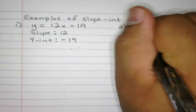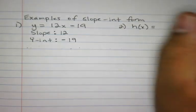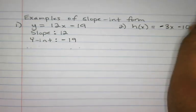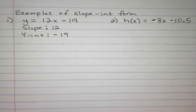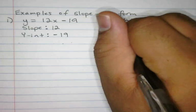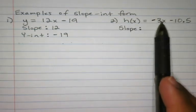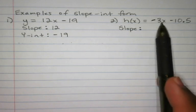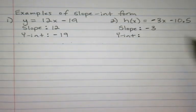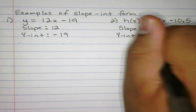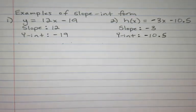Number two: h of x equals negative 3x minus 10.5. For the slope, I see a negative 3 in front of x — that's where my m would be — so my slope would be negative 3. My y-intercept — what's supposed to be plus b in slope-intercept form — is minus 10.5, so my y-intercept is negative 10.5.